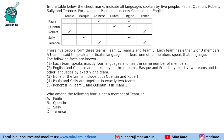Each one of them speaks 2 languages. These 5 people form 3 teams: Team 1, Team 2, and Team 3. Each team has either 2 or 3 members. A team is said to speak a particular language if at least one of its members speaks that language.